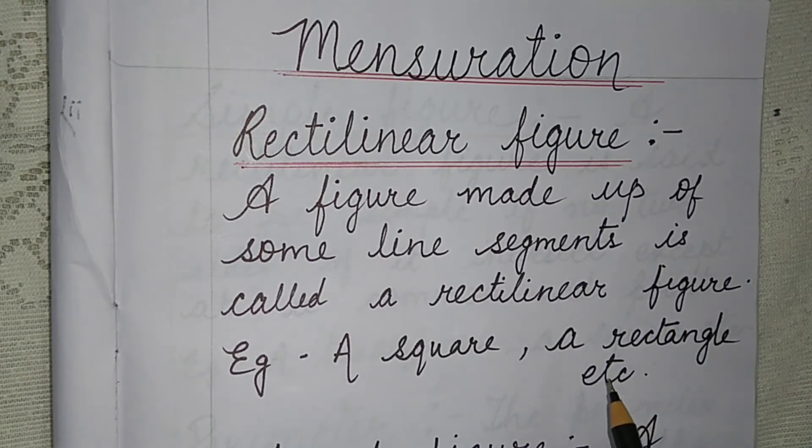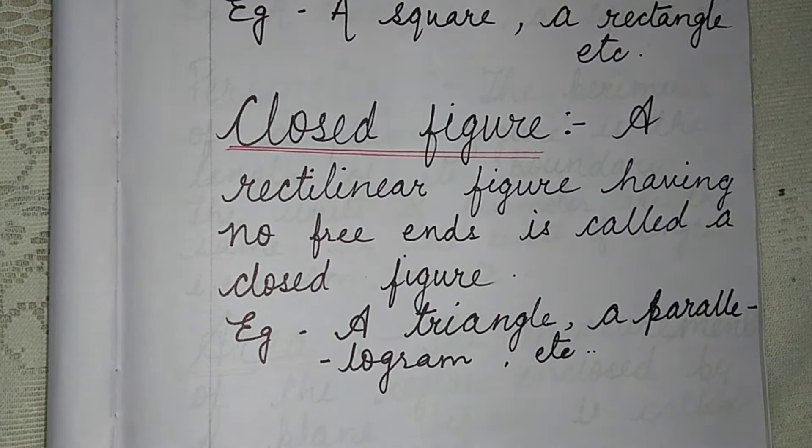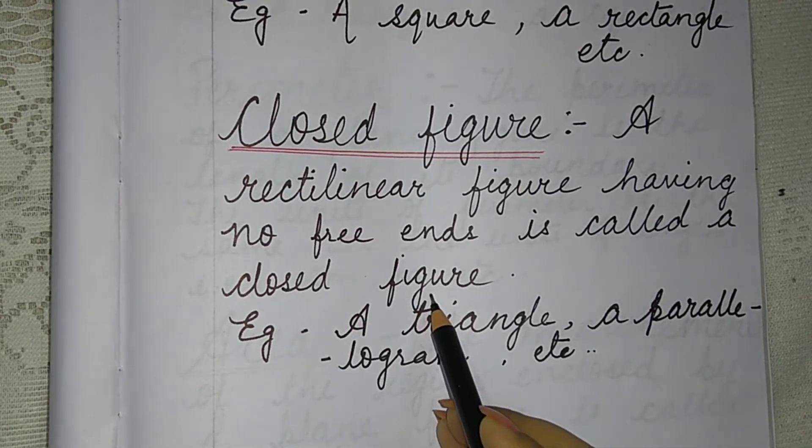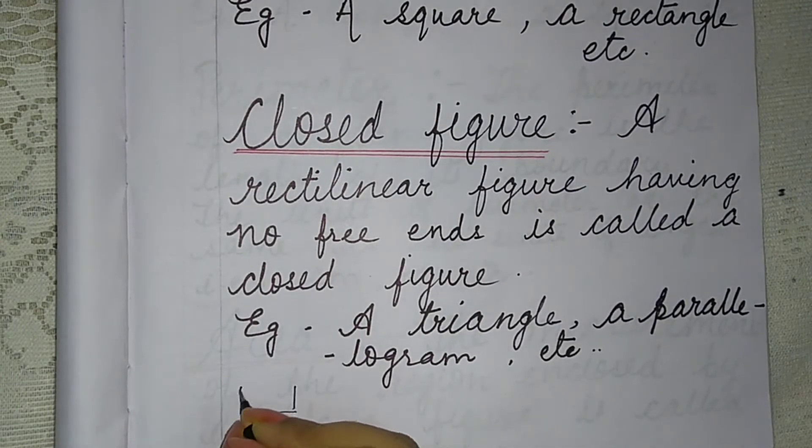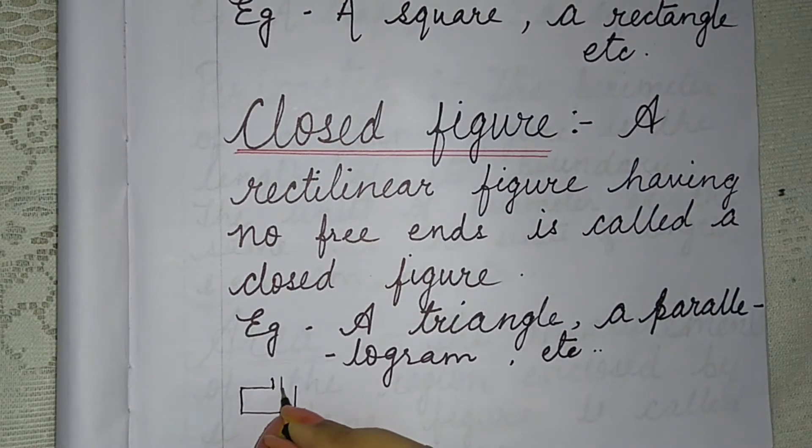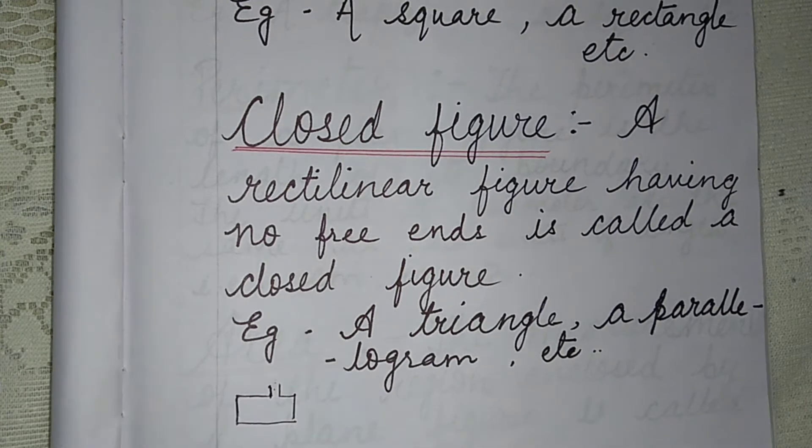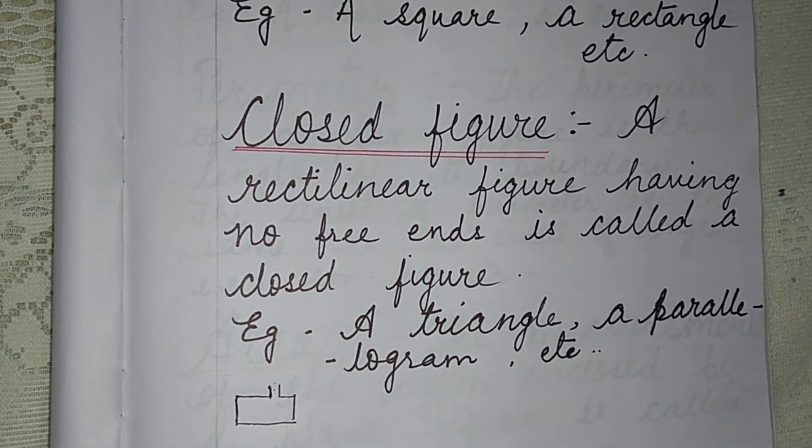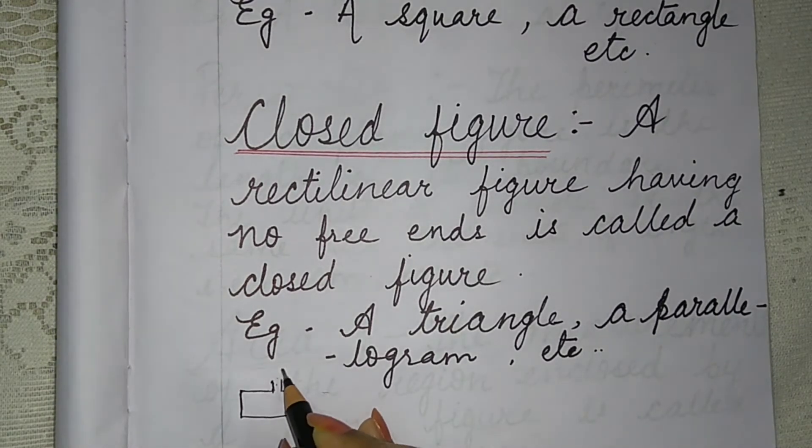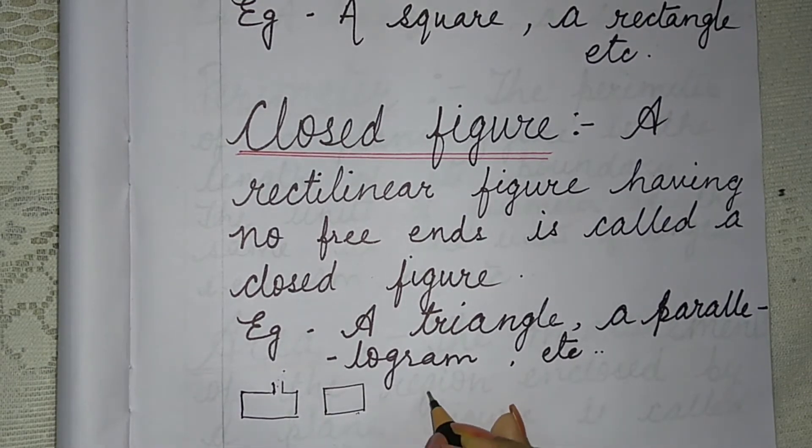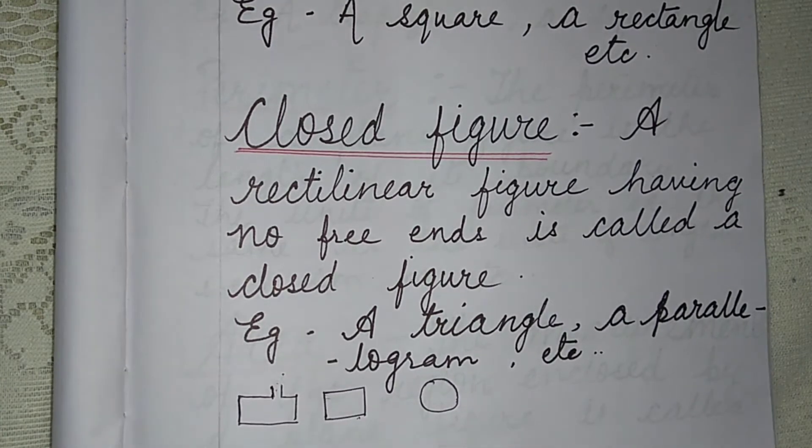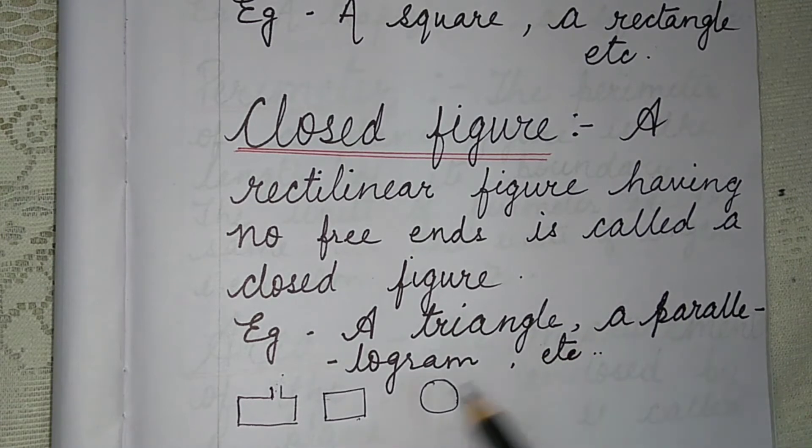Next comes closed figure. What is a closed figure? A rectilinear figure having no free ends is called a closed figure. No free end means what? Suppose you are drawing a shape whose side is open, this is not a closed figure. If it is closed like this, it is a closed figure. Examples: square, rectangle, trapezium, parallelogram, etc.